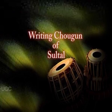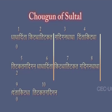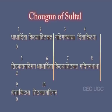The next step is how to write Chogun of Sultal. Chogun is four times faster than the basic Laik. For writing Chogun Laikari, the method is the same — the symbol is the same Ardha Chandra, a half-moon-like figure, combining four bols together in one beat. You can see Chogun of Sultal written in the script. In Chogun Laikari, the Theka of Tal is repeated four times. Only the bols are repeated four times; Matras and Tal Chinh are written only once.